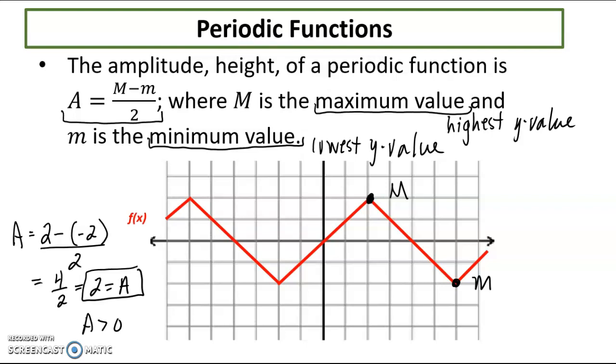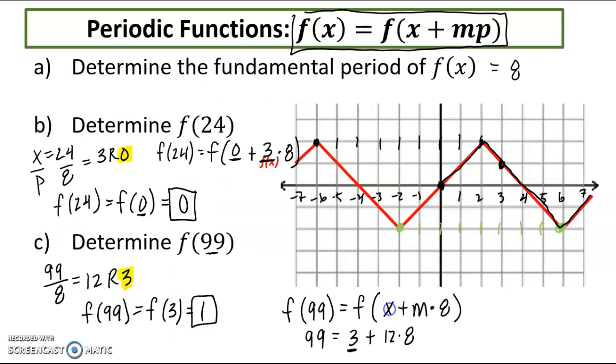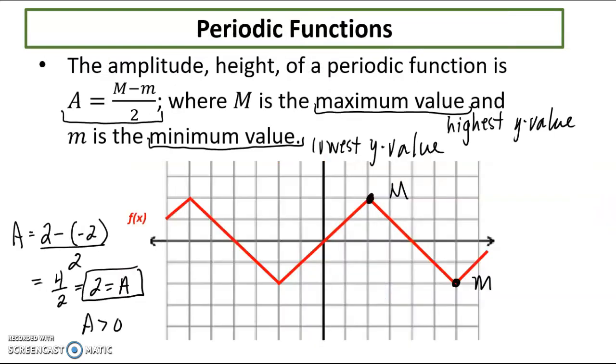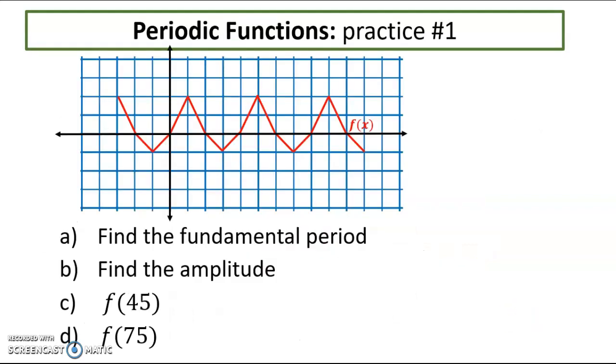And that makes sense because we're taking a smaller value from a bigger value. The period and the amplitude are important because what comes next is stretching and shrinking. If we're going to vertically stretch or shrink or horizontally stretch or shrink these graphs, these periodic graphs, then our amplitude and our period are going to change. So I would like in your notebooks, you can copy this graph if you want, but I would like you to try and determine the fundamental period, how many units does it take for the graph to repeat, find the amplitude, highest y value minus lowest y value over 2, and then try and determine these values, f of 45 and f of 75. But these are directly related to the period. So you need to solve for part A first. Thank you, I'll see you later.